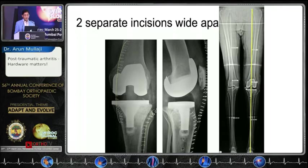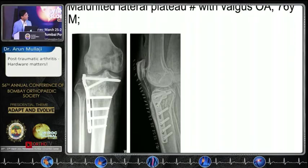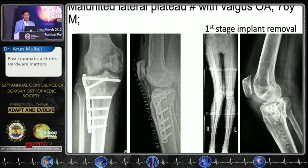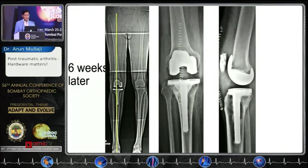A malunited lateral plateau fracture again with valgus OA in a 76-year-old male. We were concerned about the environment in which the prior surgery was done, so we removed the implants first in the first stage, sent material for culture and sensitivity, and cleaned up all the screw holes. Then six weeks later we proceeded to a straightforward navigated total knee with a long stem to bypass the screw holes, which can act as stress risers.